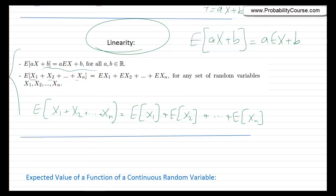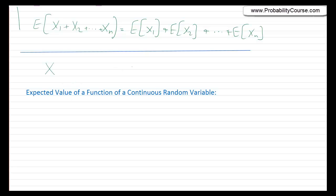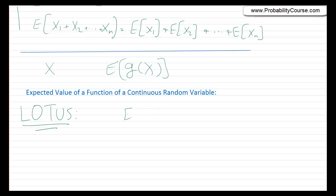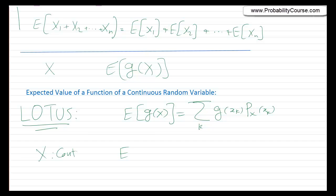One other thing we discussed for discrete random variables was that if I have a random variable X and a function g(X), we discussed how to obtain the expected value of g(X). Specifically, we talked about the law of the unconscious statistician, or LOTUS. LOTUS states that to find E[g(X)] for a discrete random variable, we find the sum of g(x_k) · P(X = x_k) for all k. A similar formula holds for continuous random variables: the expected value of g(X) is given by replacing the sum with an integral from minus infinity to plus infinity of g(x) · f_X(x) dx, replacing the probability mass function by the pdf.